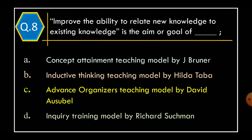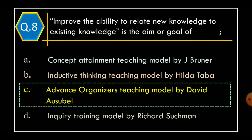Question 8. Improve the ability to relate new knowledge to existing knowledge is the aim or goal of: Option A – Concept attainment teaching model by J. Brunner. Option B – Inductive thinking teaching model by Hilda Taba. Option C – Advanced organisers teaching model by David Ausbel. Option D – Enquiry training model by Richard Schumann. The correct option is Option C: Advanced organisers teaching model by David Ausbel.